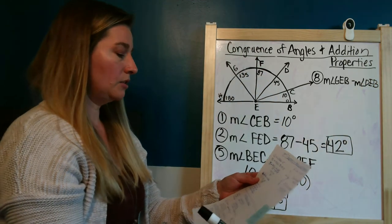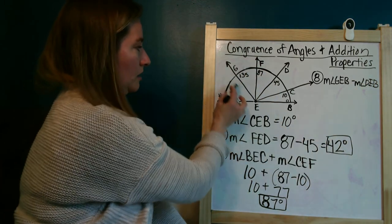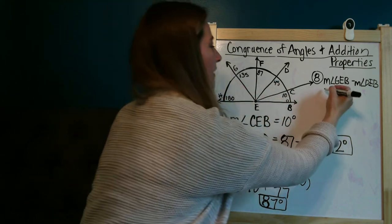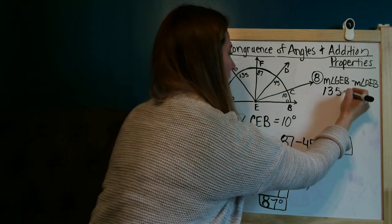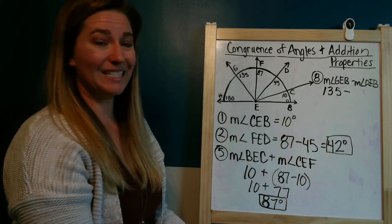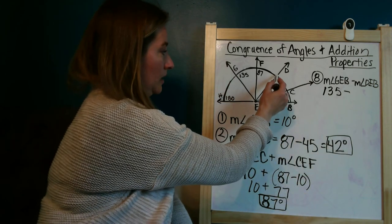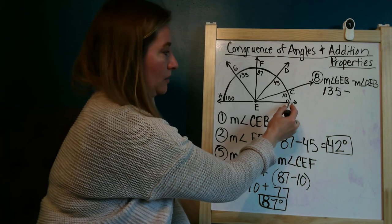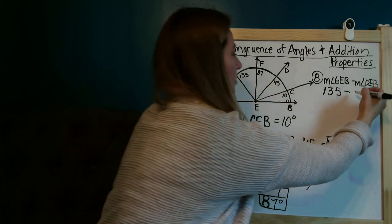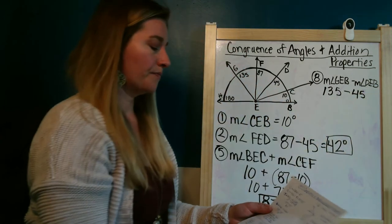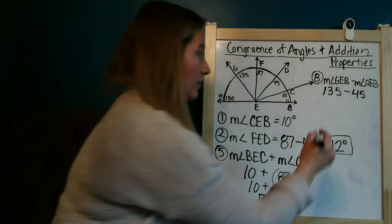Okay, so I need to look at the measure of angle GEB and that is 135 degrees. And I am going to take away DEB which is right here DEB and that's a total of 45 degrees. When I do that, I get 90 degrees.